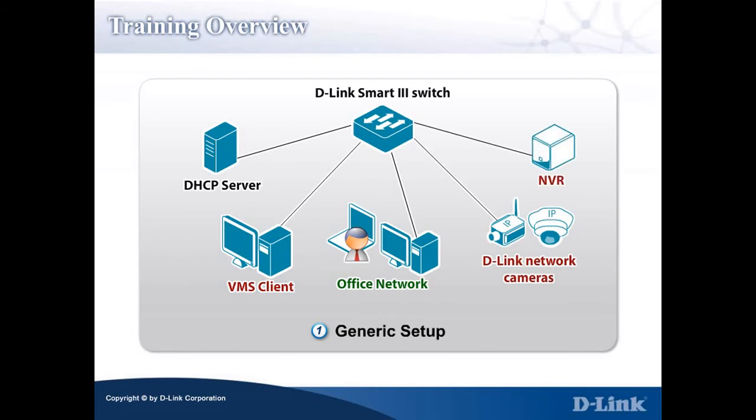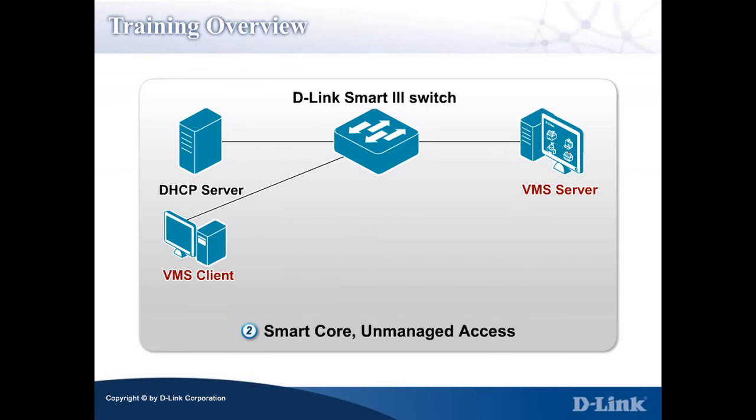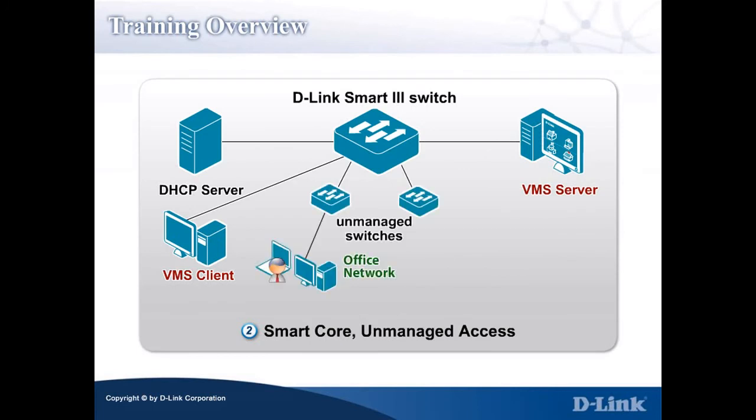Usage Scenario 2 is a two-layer network with unmanaged switches at the access layer to connect more users and network cameras. This setup is suitable for small to medium size offices with limited budgets.